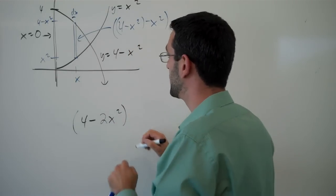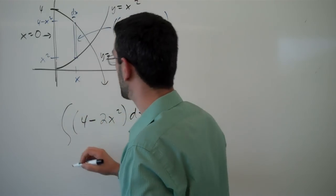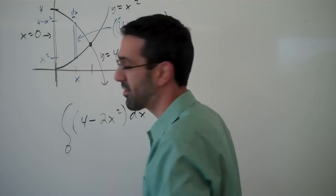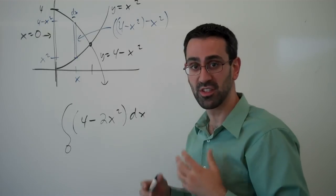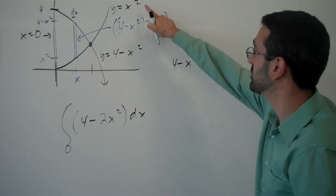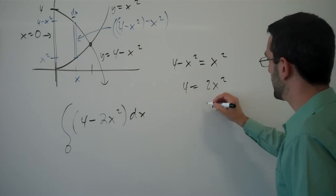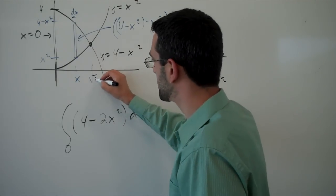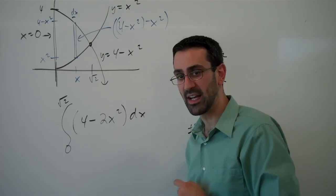That simplifies to 4 minus 2x squared — that's the height — times dx, the width, and we're adding that up from our starting point, which is 0, to wherever the curves intersect. We need to figure out where these two curves intersect, so we set 4 minus x squared equal to x squared, and we get two solutions: plus or minus the square root of 2. This one must be the positive square root, and there's the integral that will give us that area.